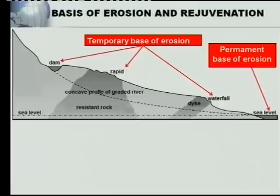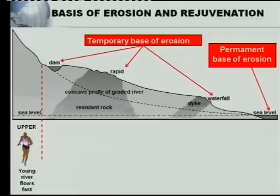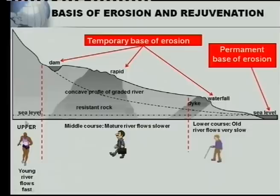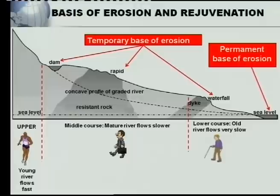Sea level is the permanent base of erosion because no river can erode lower than sea level — it would have to flow upward, which is impossible. Now for rejuvenation: remember the upper course is the young river flowing fast, the middle course is the mature river flowing slower, and the lower course is the old river flowing very slowly. From young to old, the speed of the water decreases.